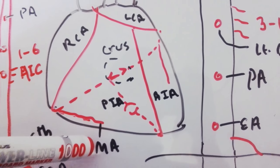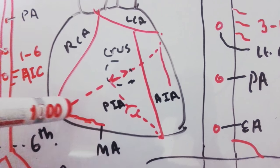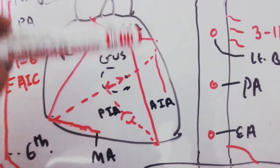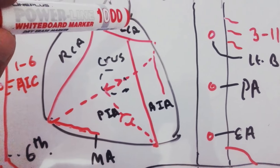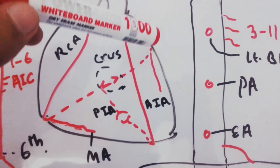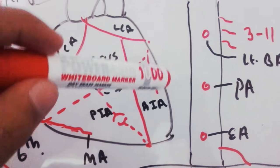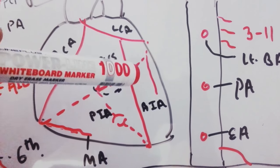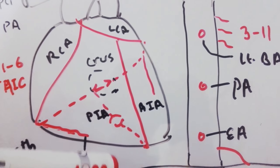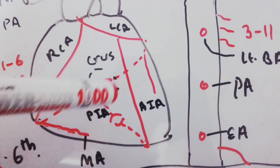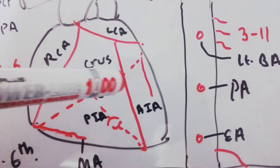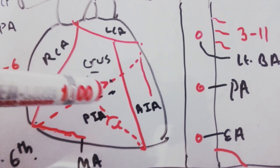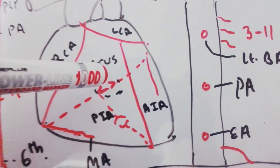The right coronary artery gives branches like the marginal artery and posterior intercostal artery. The left coronary artery gives branches like the left circumflex artery, marginal artery, and the anterior interventricular artery. The area where the two arteries meet on the posterior surface is called the crux.